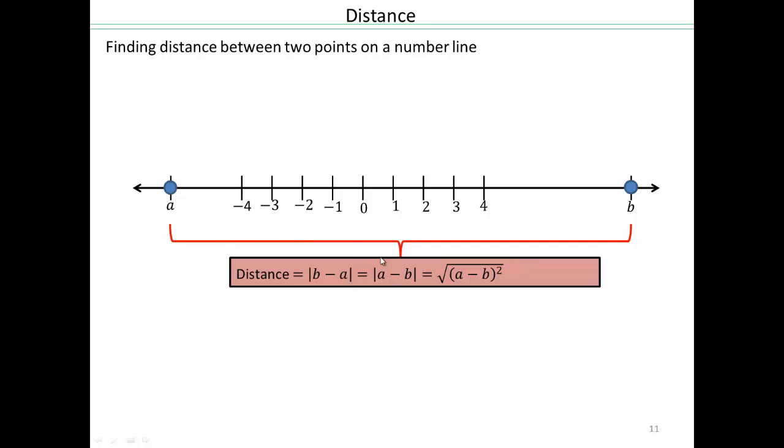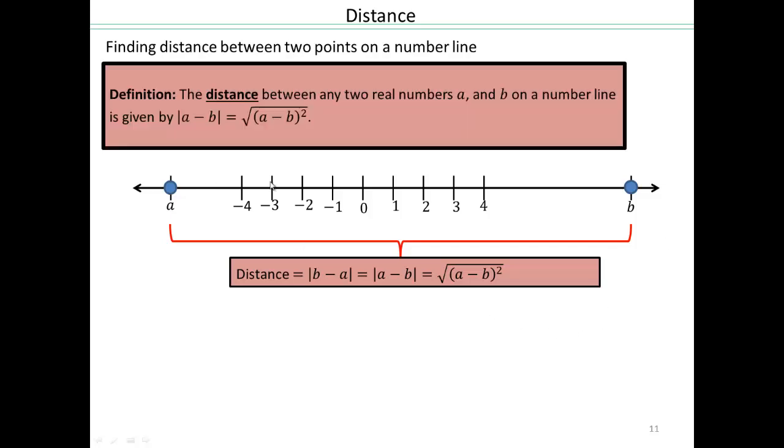Another way to think of absolute value, now that you know how to work with radicals, is square root of a minus b squared. Just keep that in mind when we extend to two-dimensional space. So in general, if you have two real numbers a and b on a number line, the distance between any two real numbers a and b is given by absolute value a minus b, which is the same as square root of a minus b bracket squared.